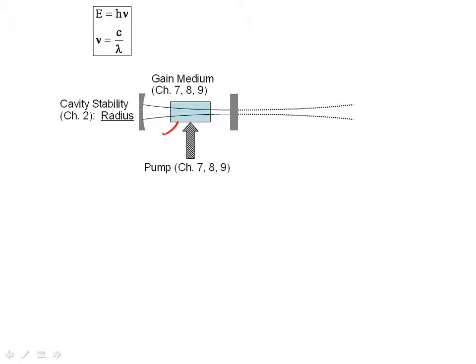So our laser consists of some gain medium, which we can write differential equations for, and cavity mirrors, which we know to be stable, and we know the radius and spacing of these determine some point on the stability curve.